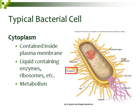Our next structure is the cytoplasm. Inside the cell, we have a liquid that contains enzymes — a specific type of protein that helps with metabolism — as well as ribosomes, and lots of solutes dissolved in it. The liquid is mostly made up of water with all these solutes and molecules in it. The function of the cytoplasm is metabolism, meaning chemical reactions in the cell.